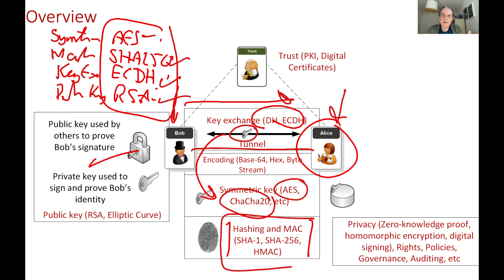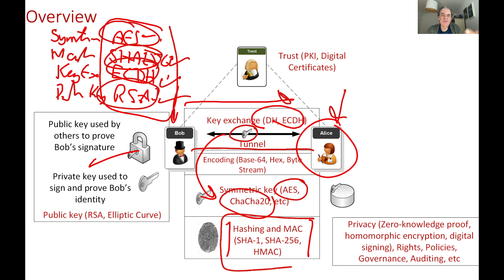Bob may offer a whole range of symmetric key methods, hashing methods, key exchange methods, and public key methods that he can support — perhaps ten or so — and then Alice the server will pick one of those, and then that will be the tunnel that's created.